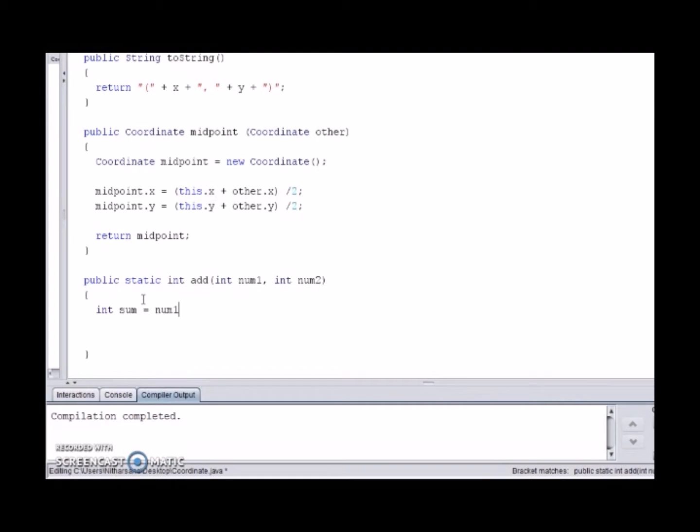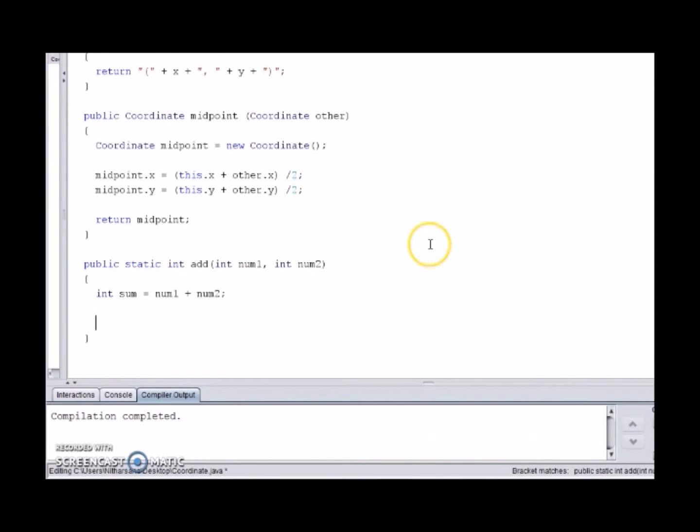We do not use this because the class method does not refer to an instance of the class like the instance method does and does not have an implicit object. Therefore, we need to include both parameters in our method header.